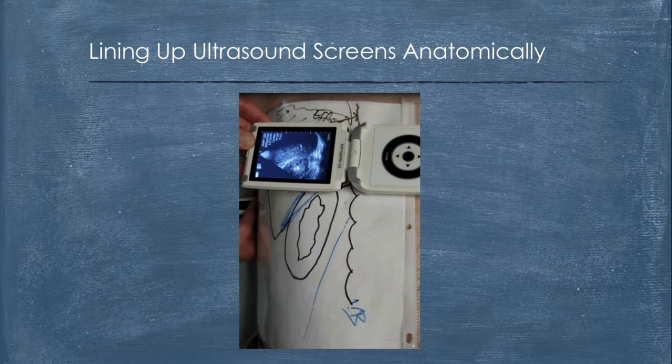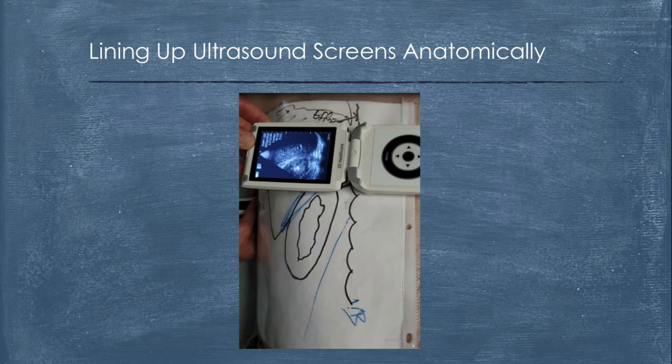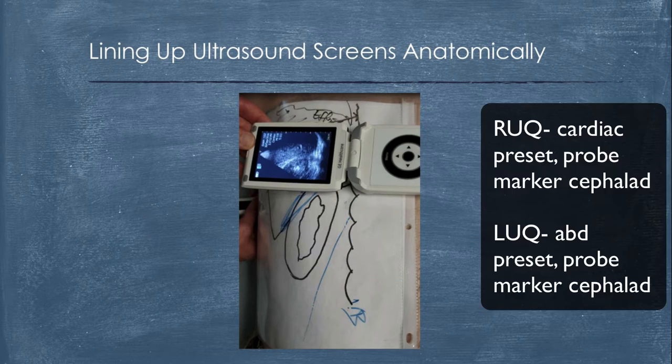Another tip that you can use is if you're using pocket-sized ultrasound machines or machines that use tablets for screens or phones for screens, you can line those screens up so that things are anatomic. And so those small ones can be adjusted and it's fun, kind of like Superman vision, and the patients really seem to like this very technical sort of look inside their body.